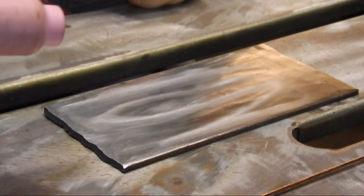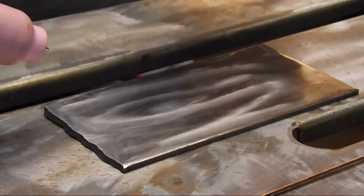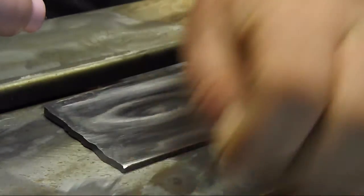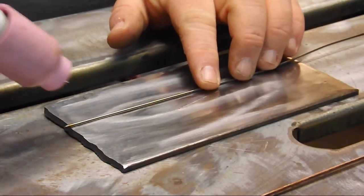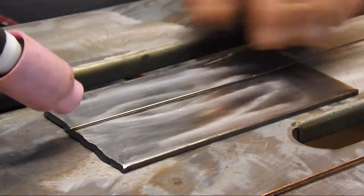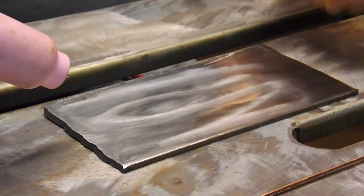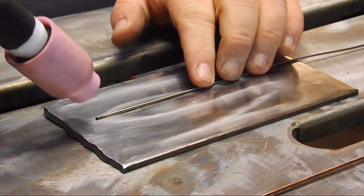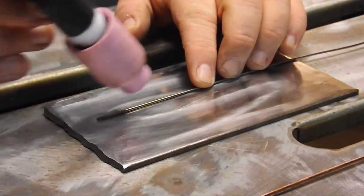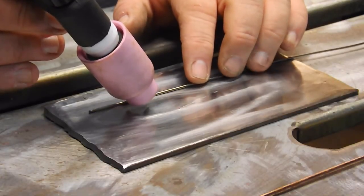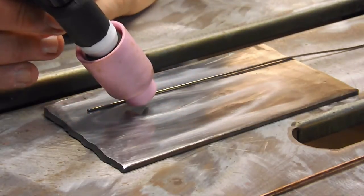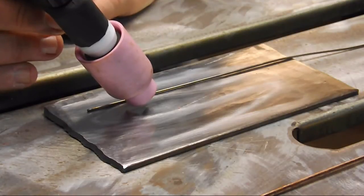So this is a 3/32nd tungsten. And for a tungsten this size, I like to keep a 1/16th inch arc gap. Now this is a 1/16th inch electrode. So if you kind of think about it, and you put your torch on top of the electrode right there, that is about the gap that I'm looking for.